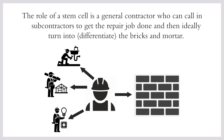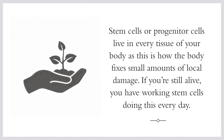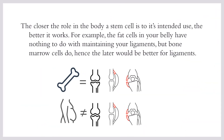Just like a general contractor might call in a plumber, carpenter, or electrician, stem cells call in other cells to help with the repair job, and then they can turn into the needed cell type. Stem cells or progenitor cells live in every tissue of your body — this is how the body fixes small amounts of local damage. The closer the role in the body a stem cell is to its intended use, the better it works. For example, fat cells in your belly have very little to do with maintaining your ligaments, but bone marrow cells do help maintain ligaments — hence, bone marrow cells will be better for ligament repair.